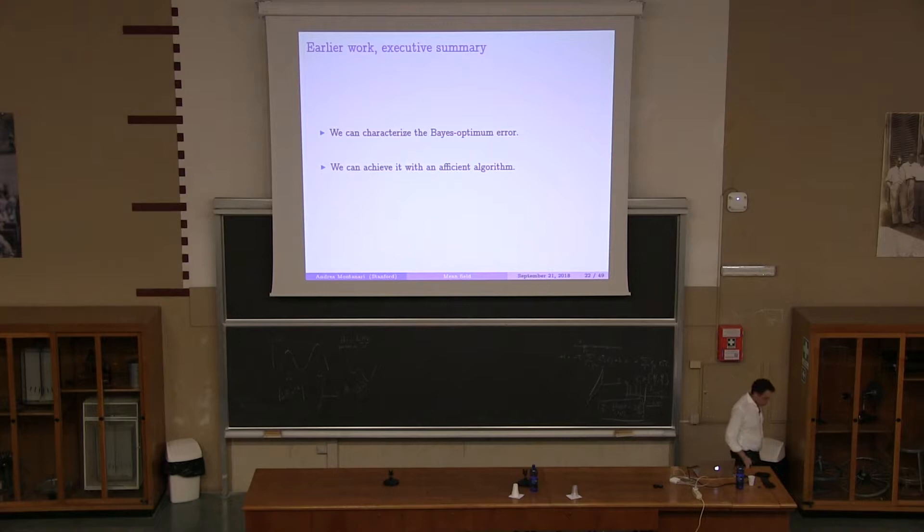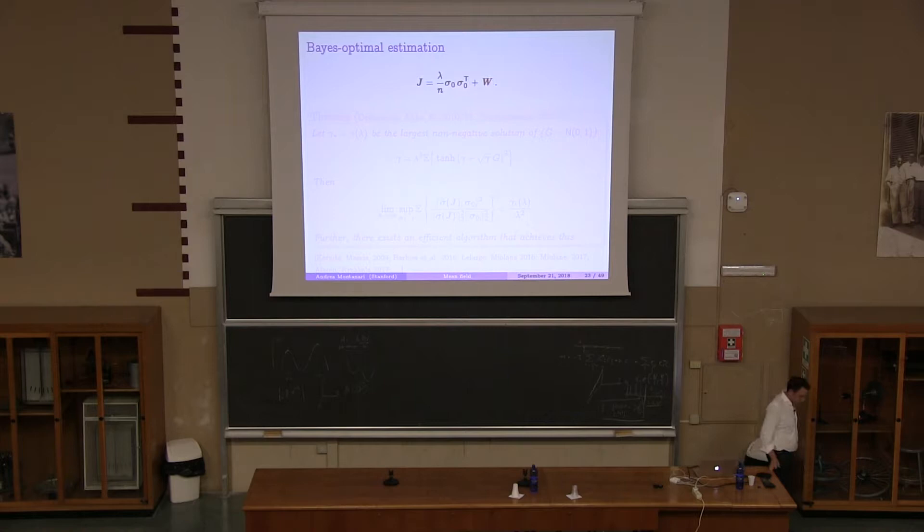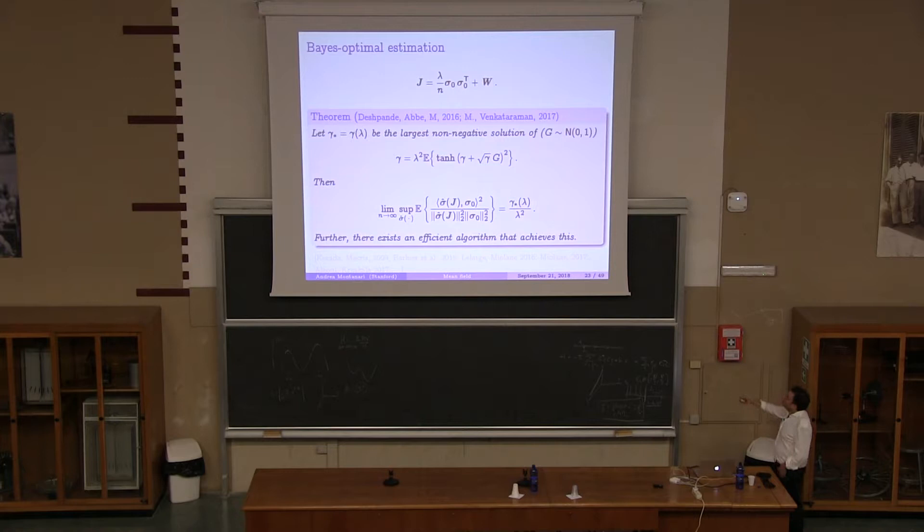And what you would like to do to do estimation is, for instance, compute the posterior, so the expectation of sigma given J. Now, I brought this little parenthesis because this is, strictly speaking, 0, because the Hamiltonian is symmetric. You have to break the symmetry. I will not go into detail of how we break the symmetry, but I can do it at the end of the talk if you're interested. Okay, so this model we studied, and other people studied, and all sorts of generalization of it. And so we know a lot of detail of things, and we know it in a rigorous way. And the executive summary is the following. We can characterize exactly what is the Bayes optimum error, and we can have an algorithm that we can prove achieves this Bayes optimal error. Okay? So we can compute this posterior expectation efficiently, actually, in linear time.